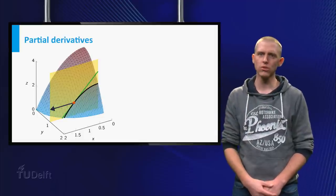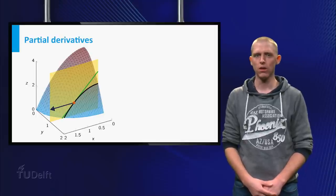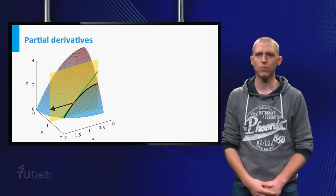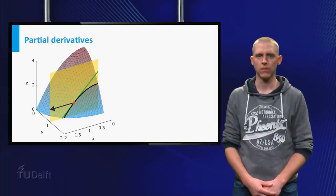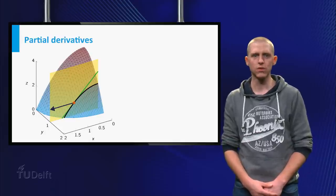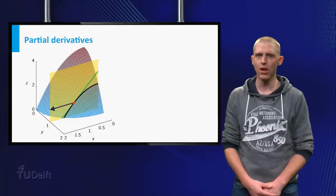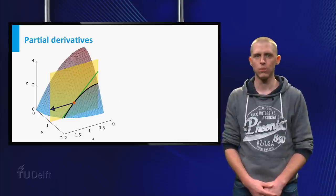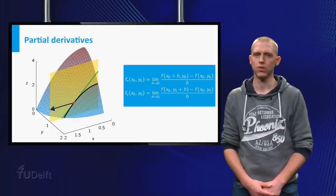You can find the partial derivative with respect to x in the point x0, y0 by drawing a vertical plane parallel to the x-axis and through the point x0, y0. If you then look at the intersection curve between this plane and the surface z is equal to f of x and y, you can use a tangent line to calculate the partial derivative with respect to x. This finally gives you the definition of the partial derivatives.